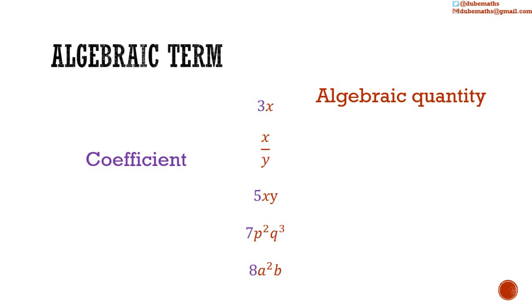5xy, 7p squared q cubed, and 8a squared b. In the third example, the algebraic quantity is xy, and the coefficient of xy is 5.